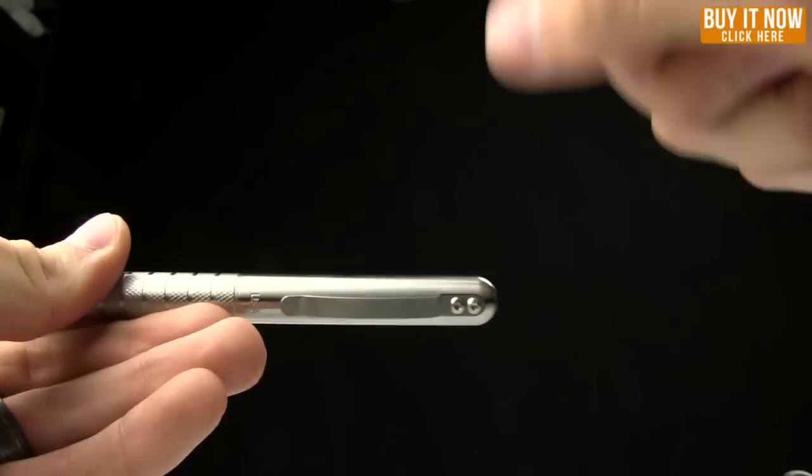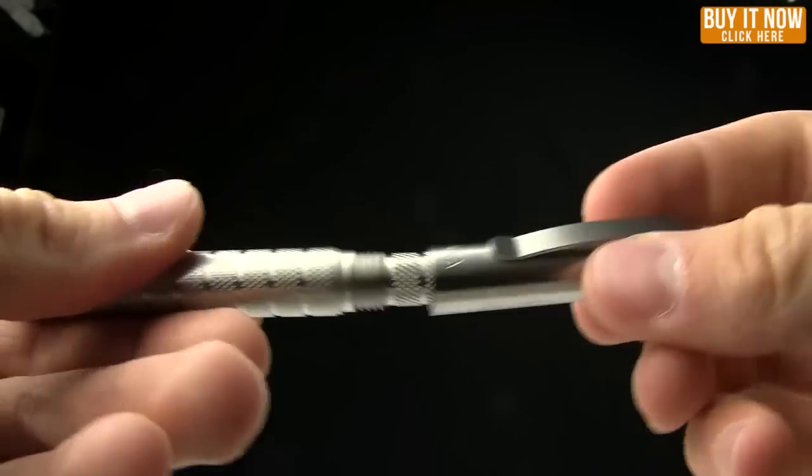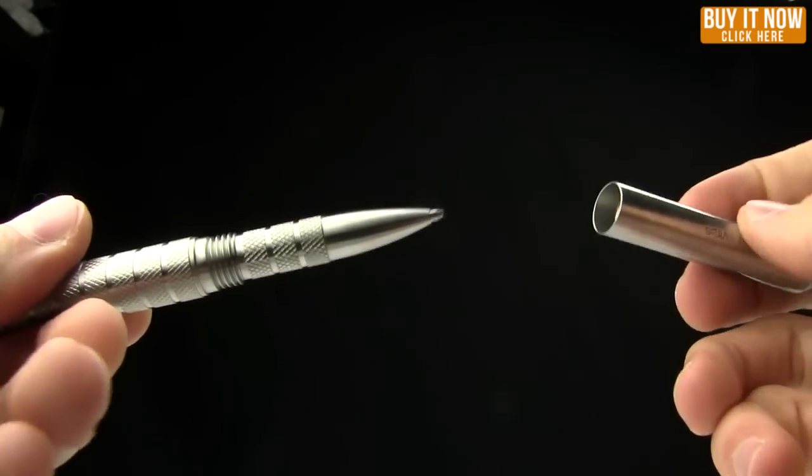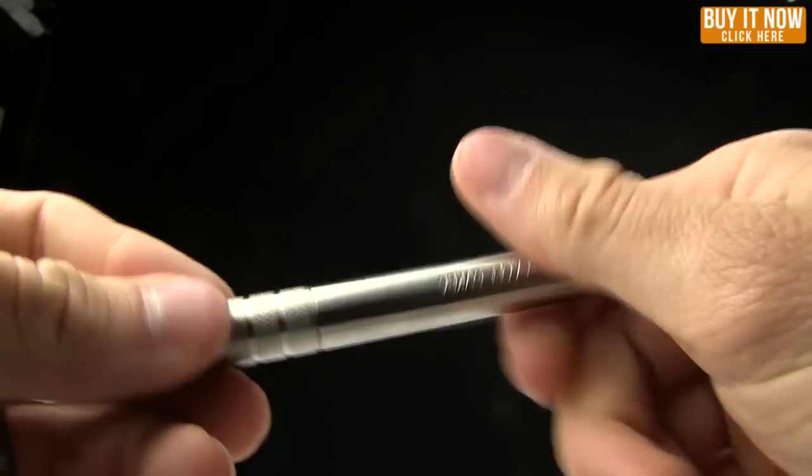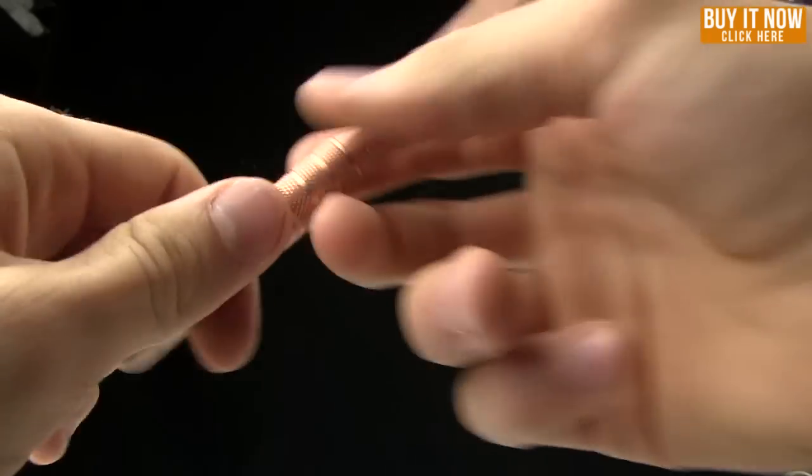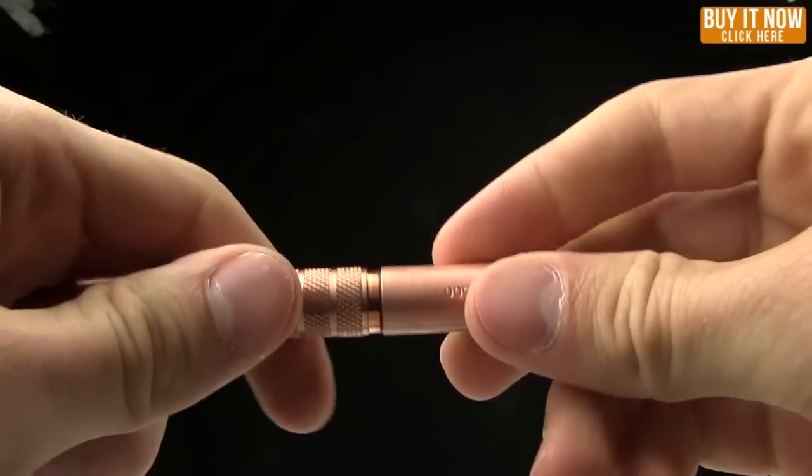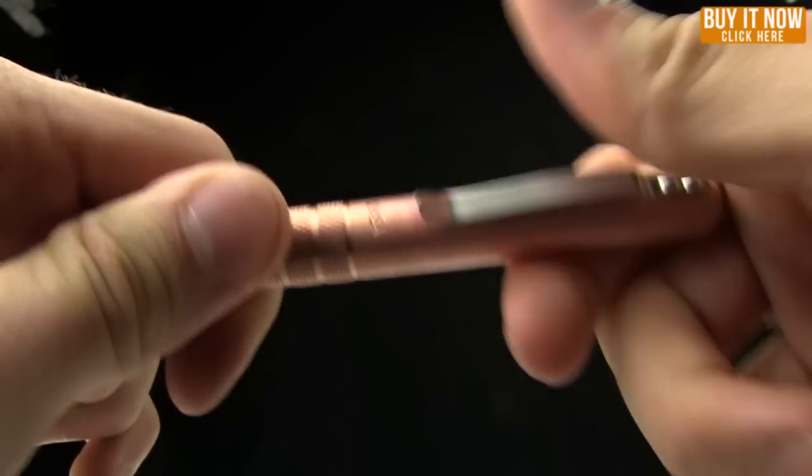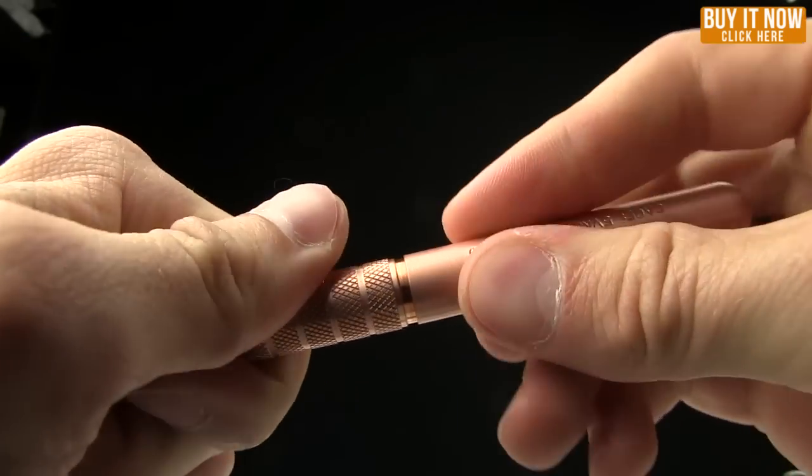So anyway, on the titanium version and on the stainless steel and the titanium versions, the cap screws off. I think it's about rotation and a half and you're off and you're good to go. Now the difference between those is on the copper version, you unscrew it and it's got an O ring in there as well. So kind of a slide plus rotation. So kind of interesting in that regard, just a different style.